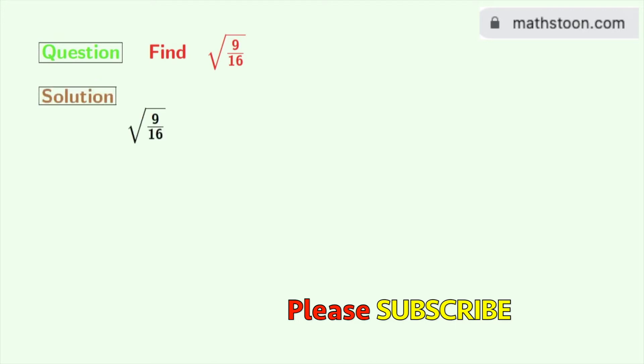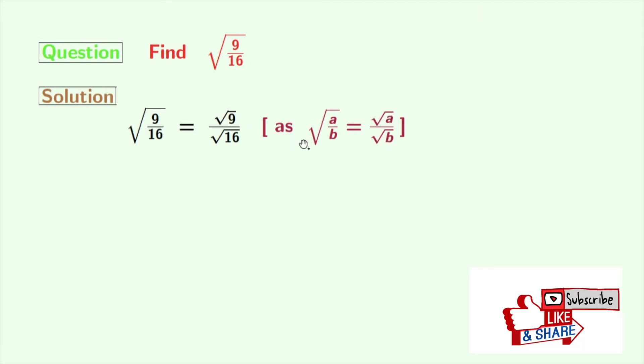So our given square root is square root of 9 by 16. Now we will rewrite this as square root of 9 divided by square root of 16. As we all know that square root of a by b is equal to square root of a divided by square root of b. Here a is 9 and b is 16.